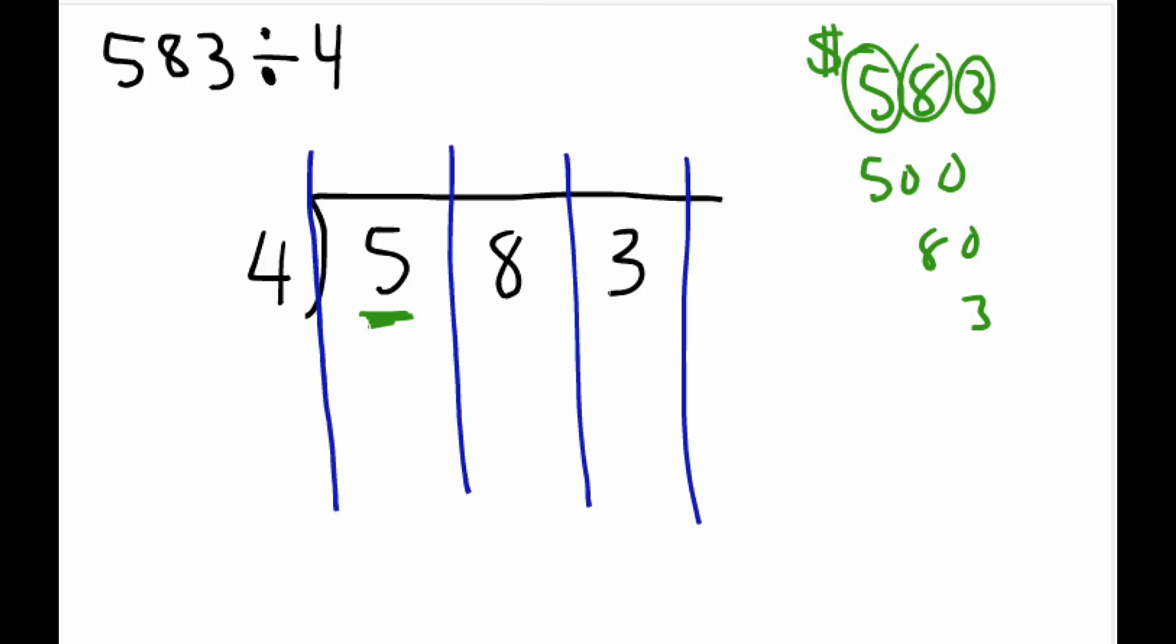When I look over here at this 5, that stands for 500 dollar bills, and I need to divide it by 4, into 4 separate groups. That means each person gets 1 of those 100 dollar bills, so we have 1 100 dollar bill left over. And I don't have enough to divide up amongst the 4 people anymore. So I'm going to cash that 100 dollar bill in for 10 10 dollar bills.